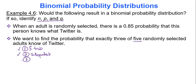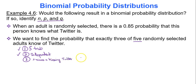Condition three: each trial has two possible outcomes — a success and a failure. What would be deemed a success here? Knowing what Twitter is. And what would be the failure? Not knowing what Twitter is.